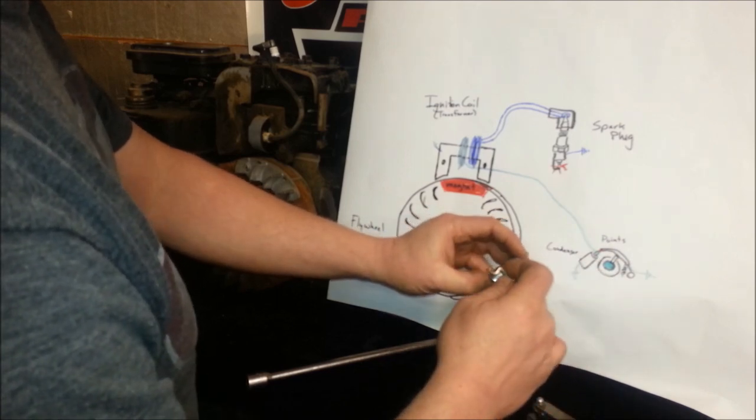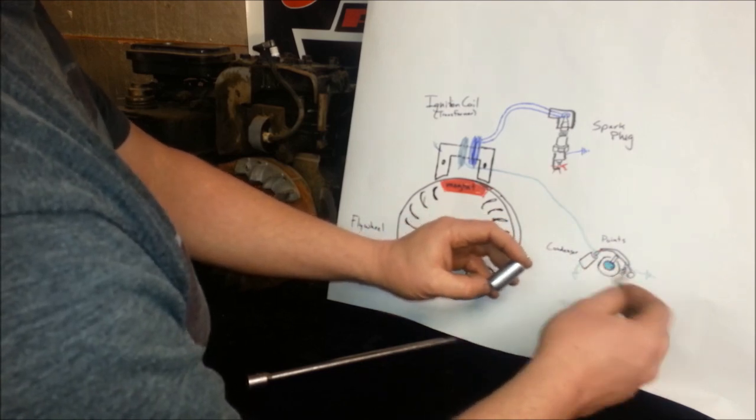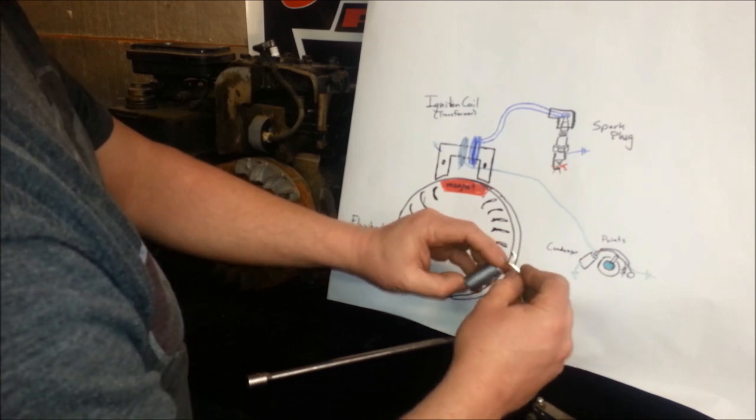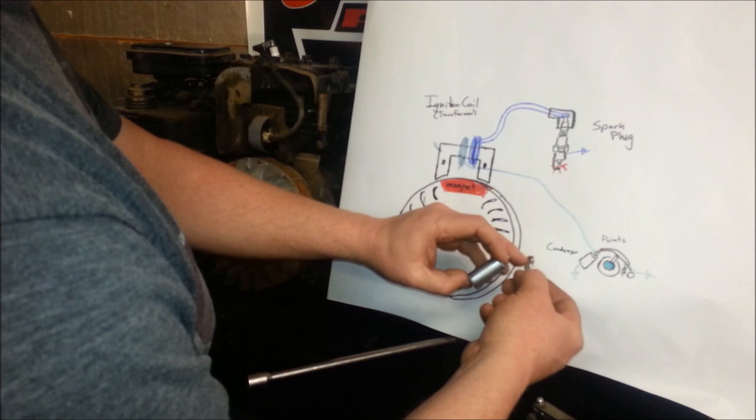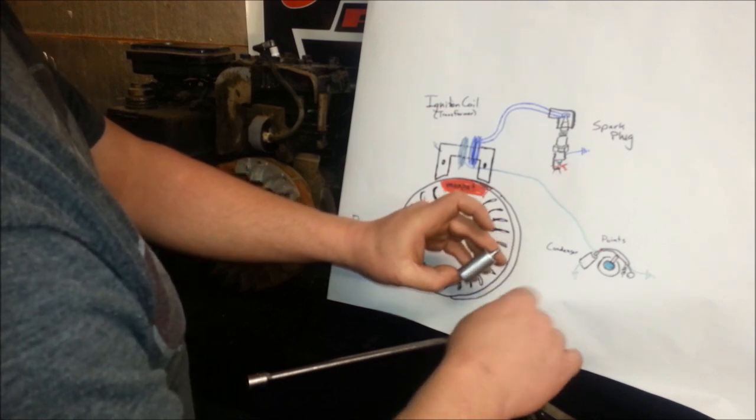And the condenser serves two purposes. The main purpose is to prevent arcing at these points. Otherwise, every time that snapped open, it would leave a spark and it would burn up these points pretty quickly.